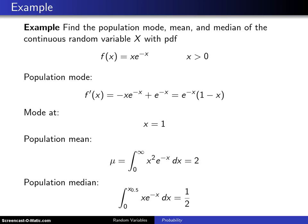Here's an example that illustrates the difference between the population mode, mean, and median. Find the population mode, mean, and median of the continuous random variable X with probability density function f(x) = xe^(-x) on the support x > 0.